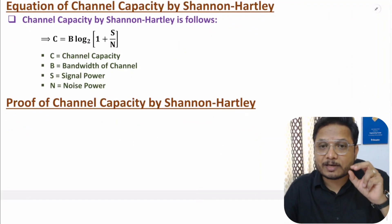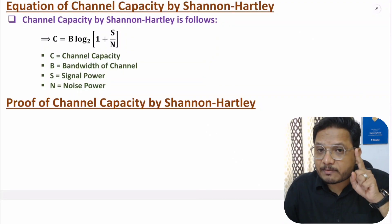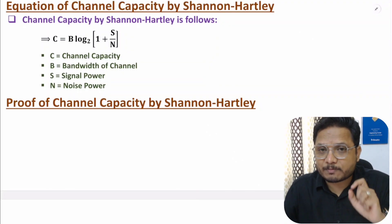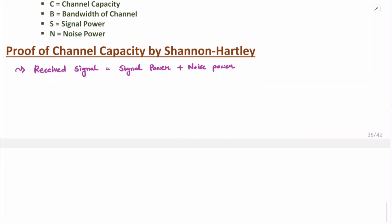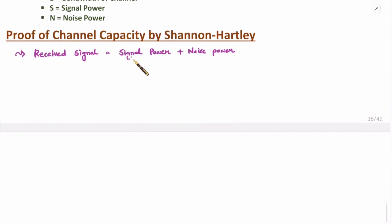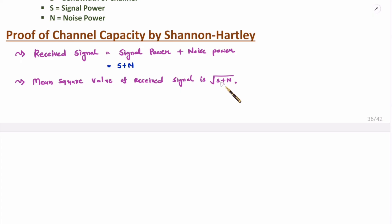To derive this equation, one should know that when you receive a signal, you receive signal power as well as noise power. So the received signal has power S + N, where S is signal power and N is noise power. The mean square value of the received signal is √(S + N), and the mean square value of noise power is √N.